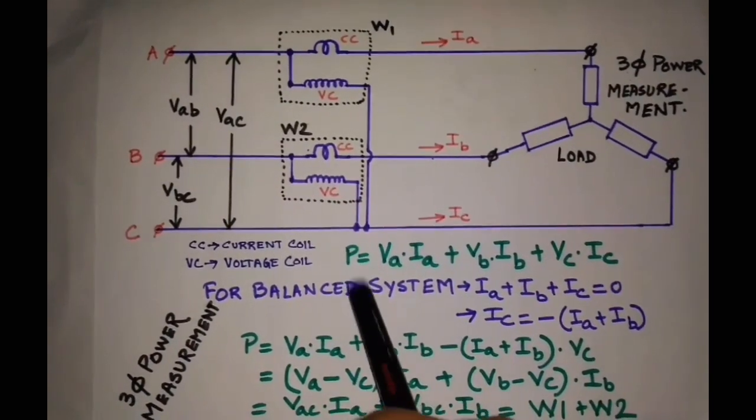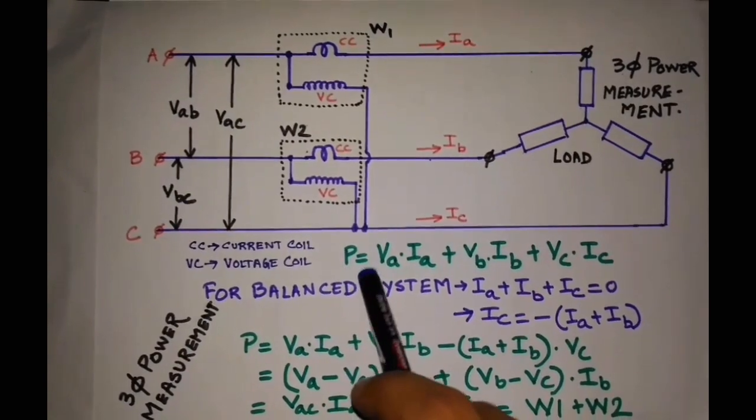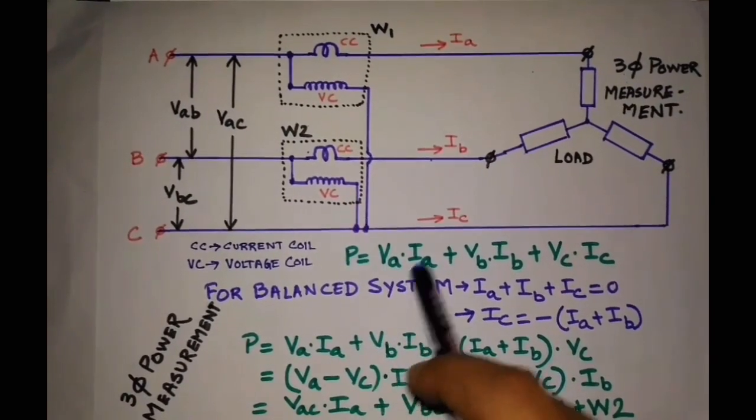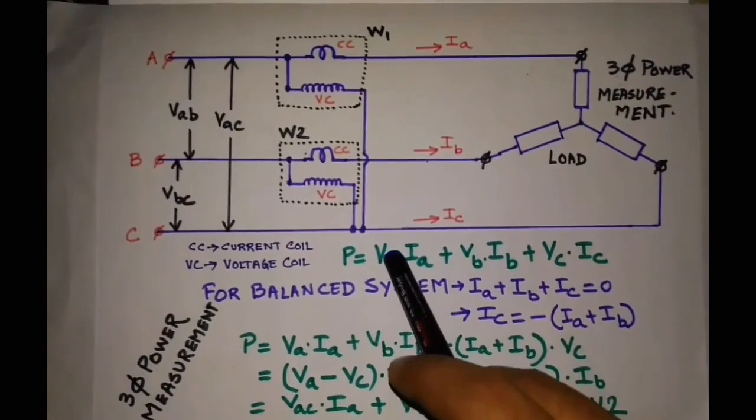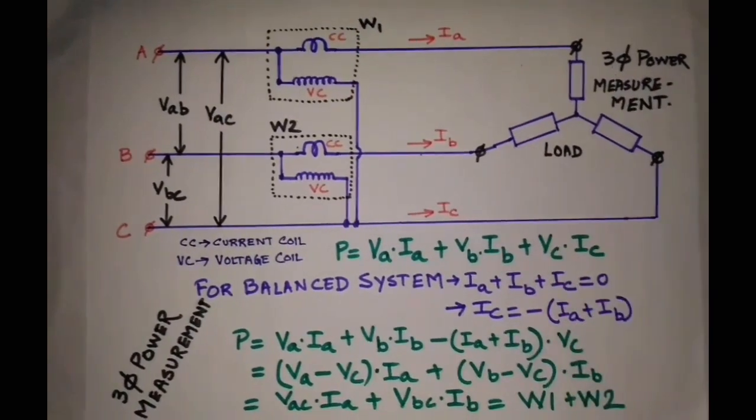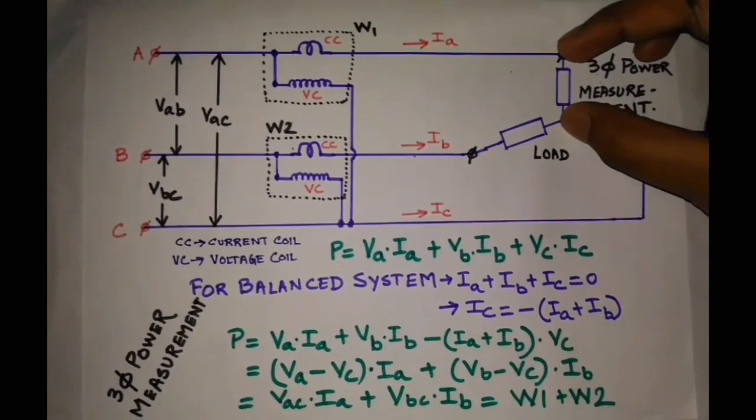Our three-phase power is P = Va·Ia + Vb·Ib + Vc·Ic, where Va, Vb, and Vc are the phase voltages, that is voltage across this point.